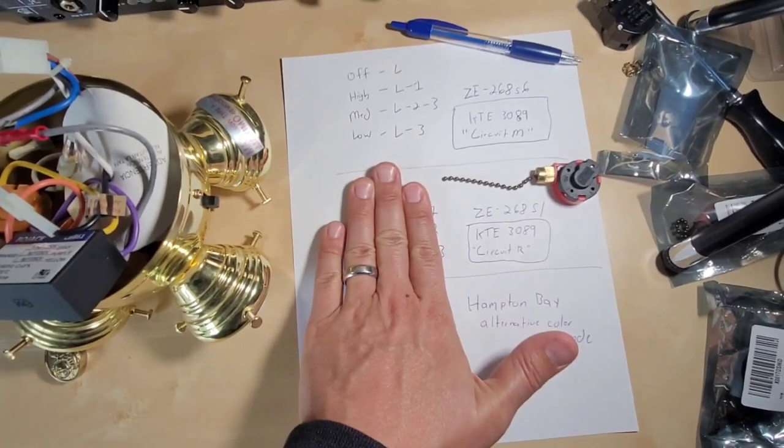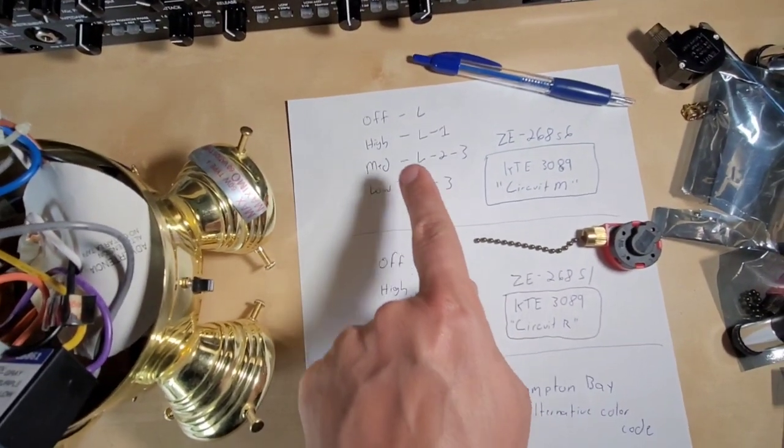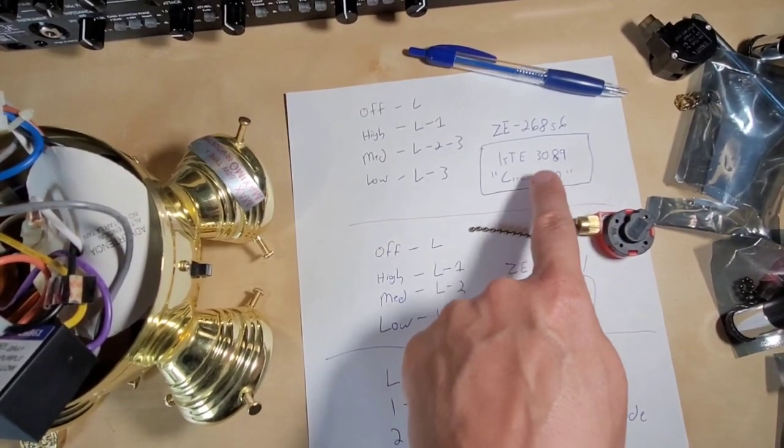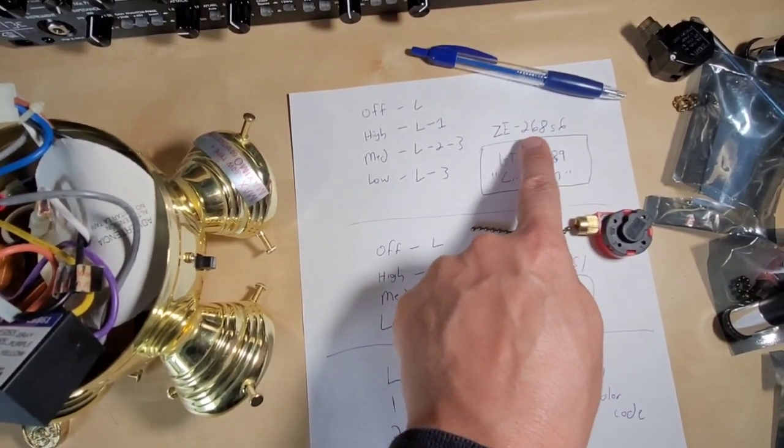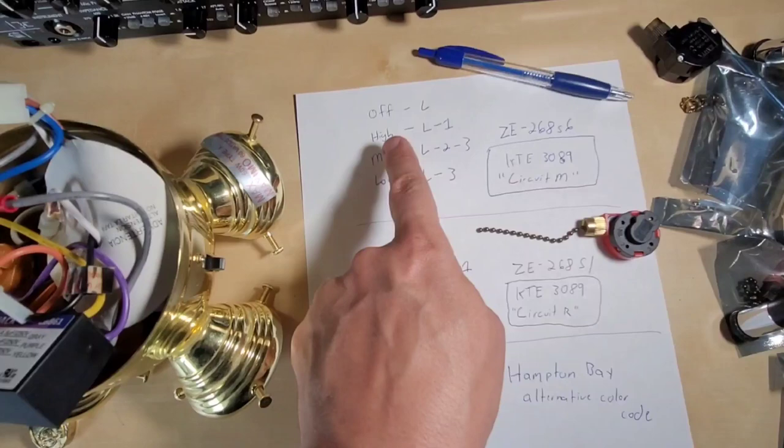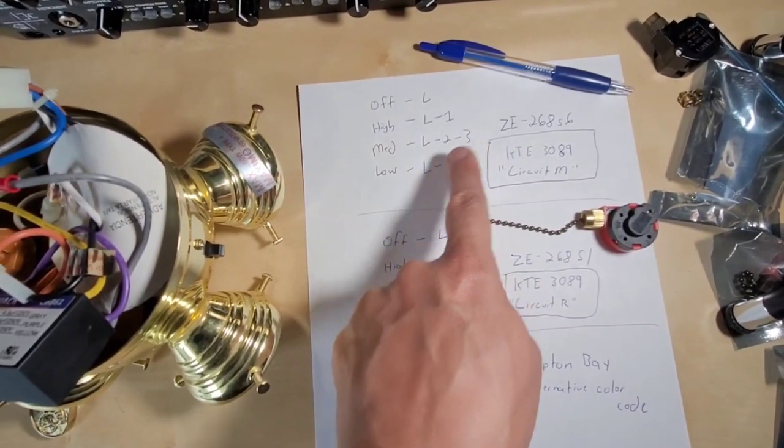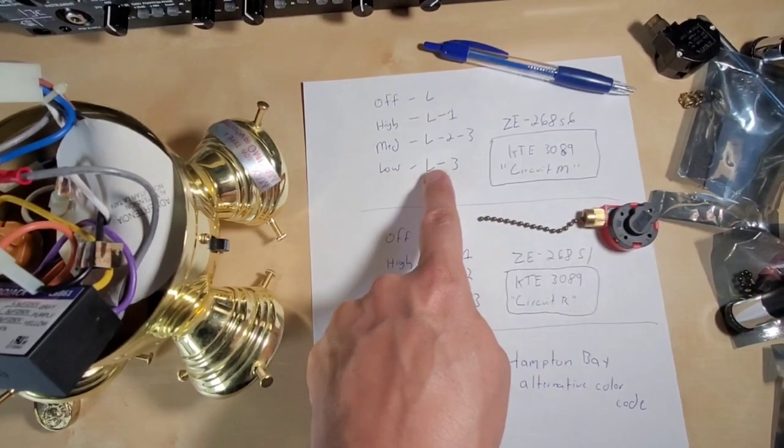This is not the correct one. What is actually the correct one is if you have the KTE ZE 3089 but circuit M, or a ZE 268 S6, where high is L to one, but medium is L to two to three, and low is L to three.